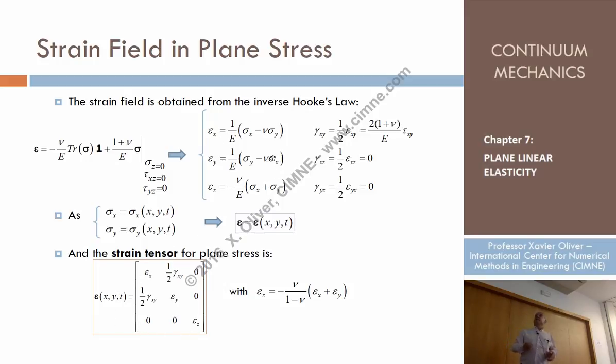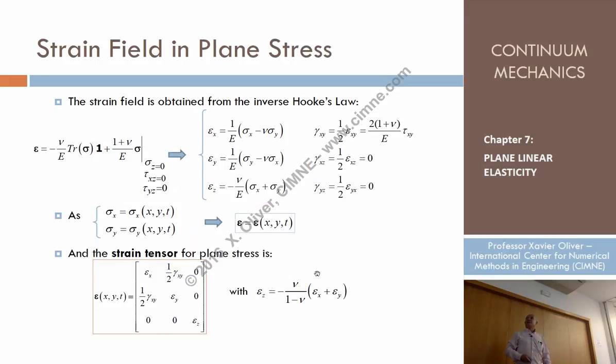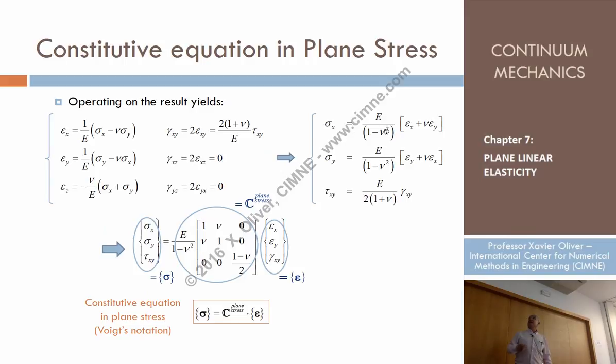So from here we can compute epsilon z, but we can compute also sigma x, sigma y. By solving these equations, we can obtain the three sigma x, sigma y, tau xy stresses in terms of epsilon x, epsilon y, and gamma xy strains. So we can just place that into a vector. Now I'm using Voigt's notation. That would be the vector of relevant stresses. What are the vectors of relevant stresses? What about the strains? Look, epsilon z doesn't appear here. Why? Well, because I've substituted this equation.